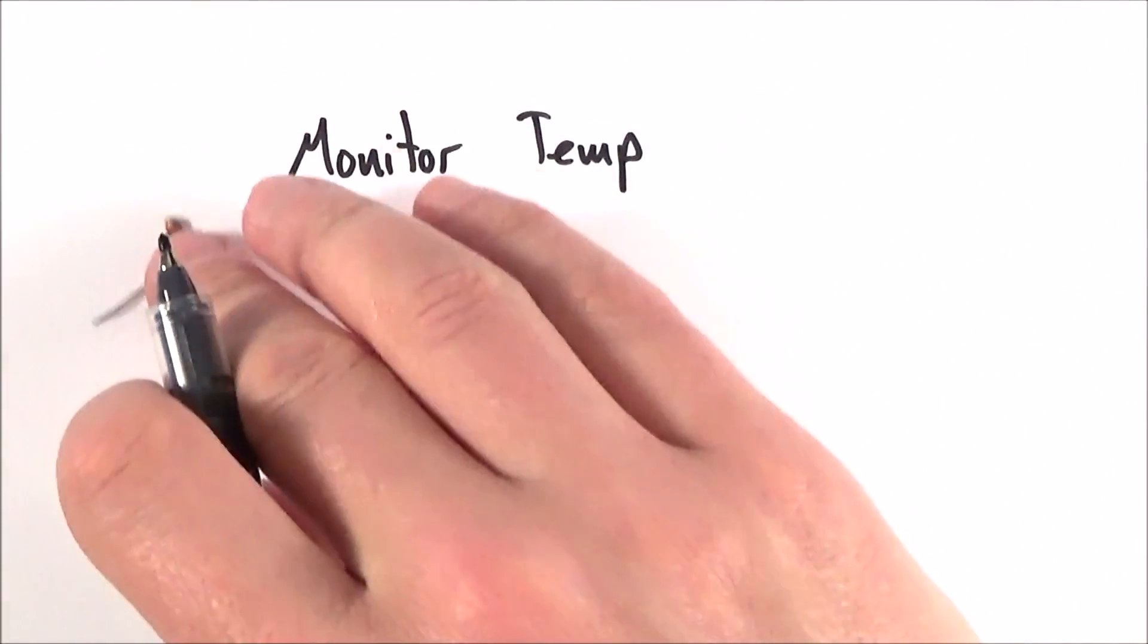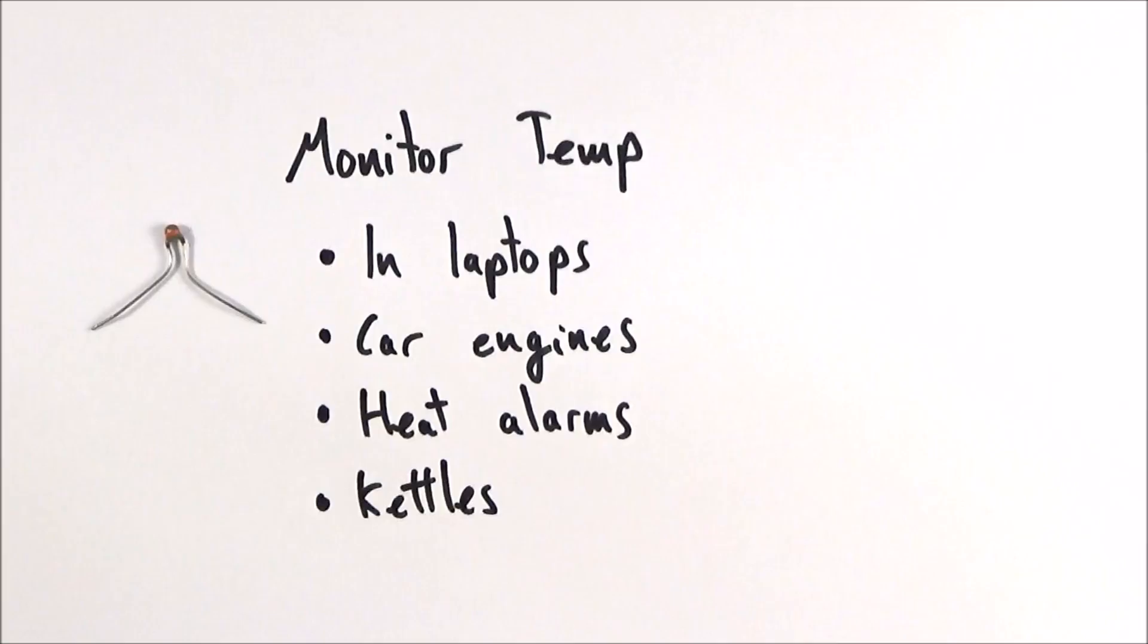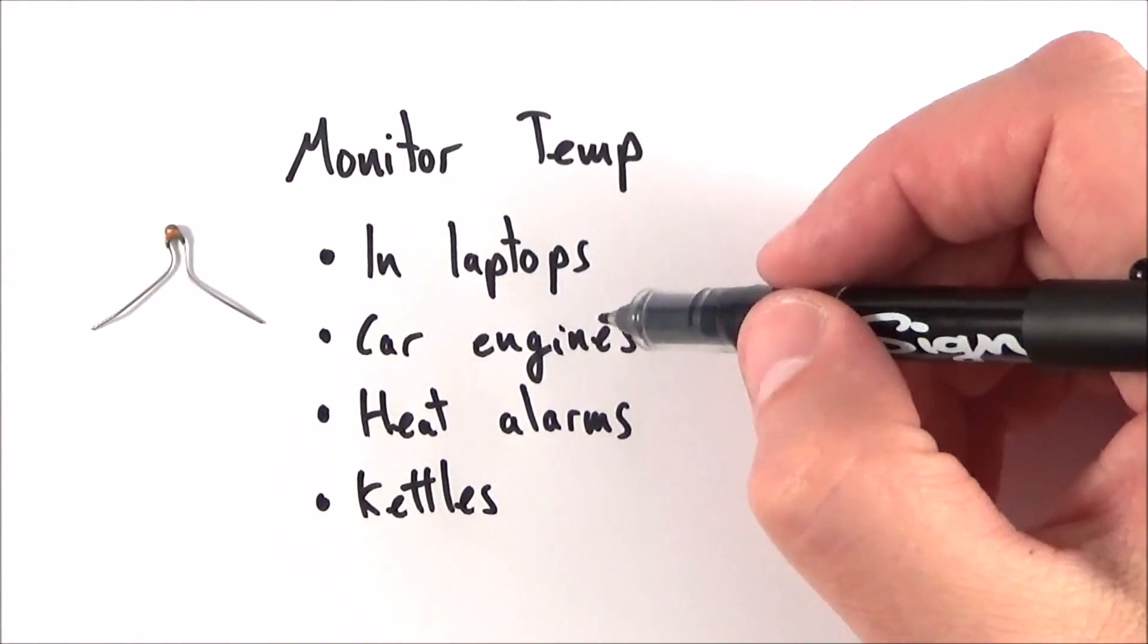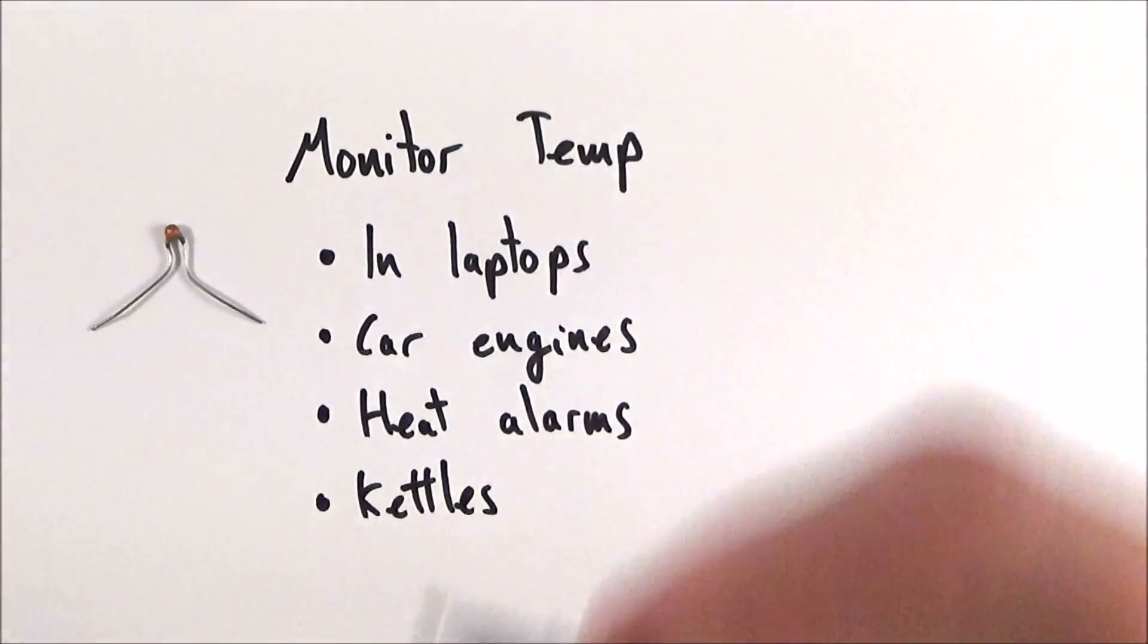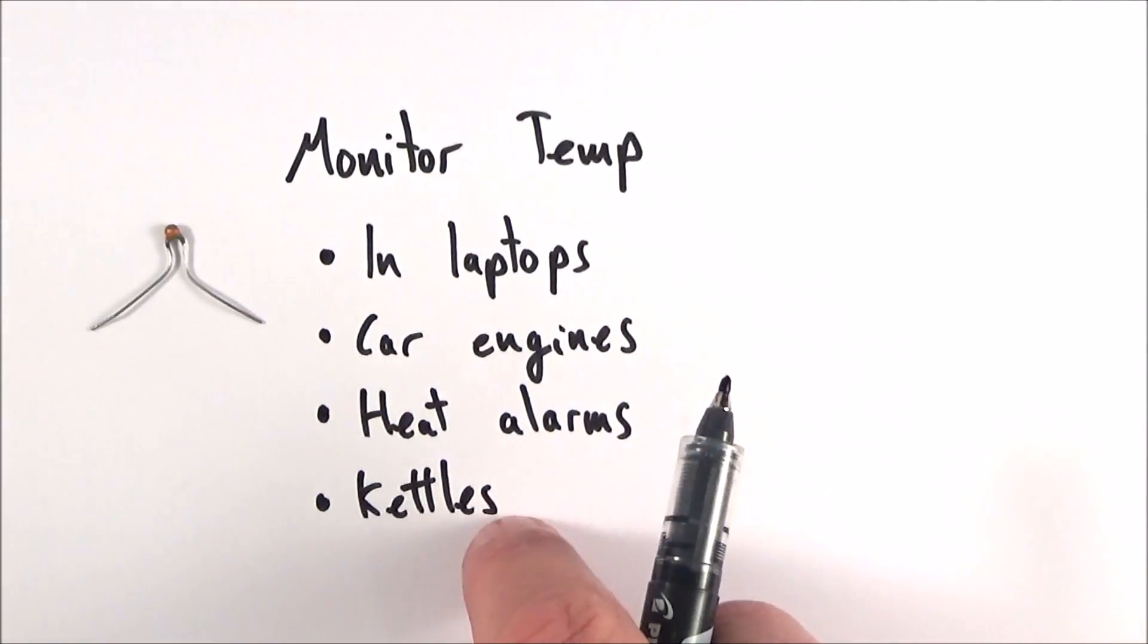These are really used to monitor temperature in different situations: perhaps inside a laptop so it knows when the fan needs to turn on, maybe in a car engine to make the engine warning lights come on if the oil gets too hot, as we've already seen in heat alarms in the kitchen, or perhaps in a kettle so it knows when to turn off.